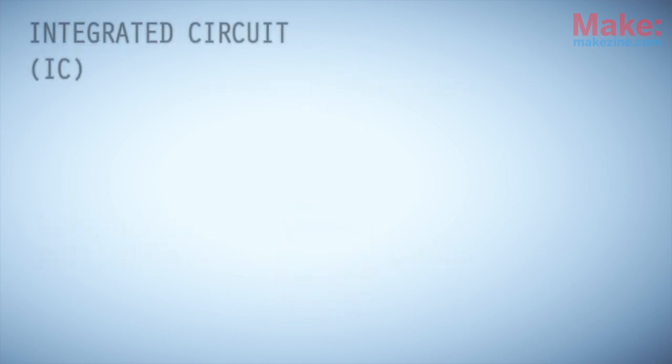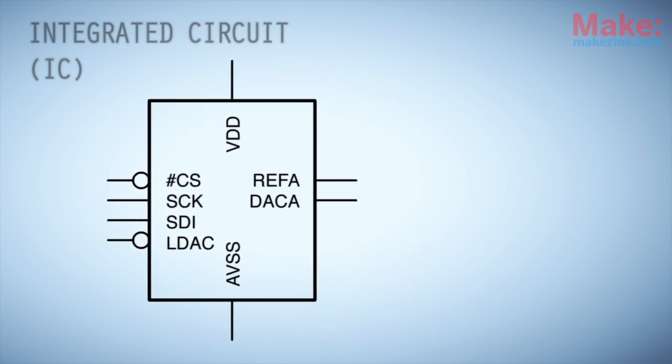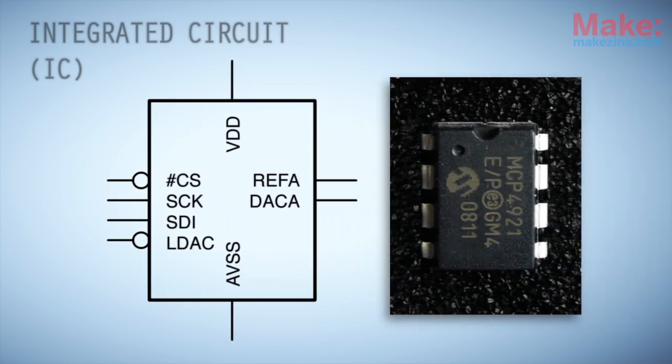Integrated circuits are often symbolized as a basic rectangle, with a line used to represent each pin, and abbreviations to specify pin functions. The layout of these pins can differ quite a bit from their arrangement on the actual body of the IC. So it's important to pay attention to each pin's number label, in order to determine its corresponding pin on the IC's physical layout.